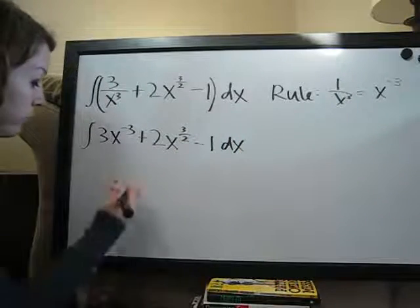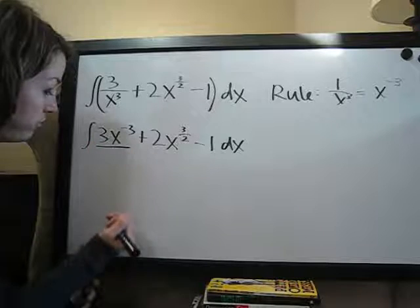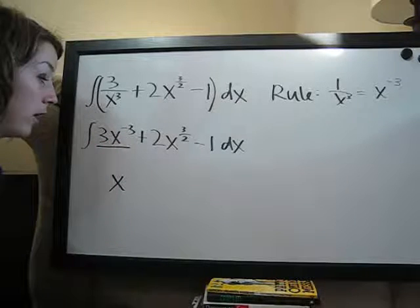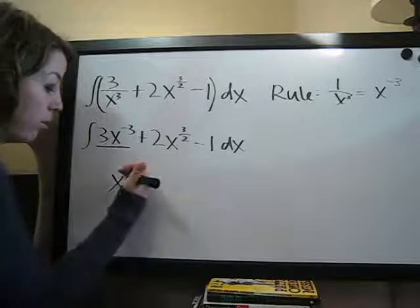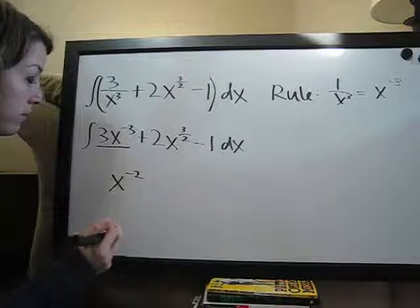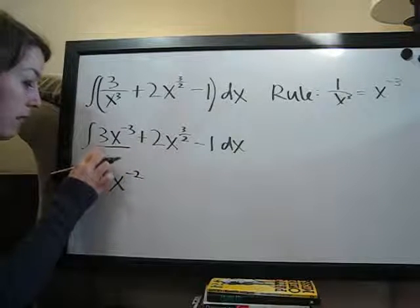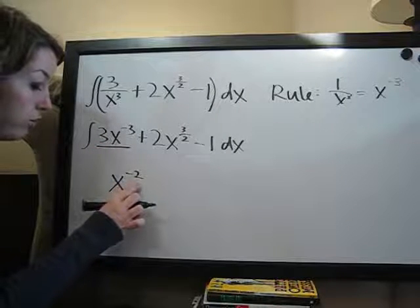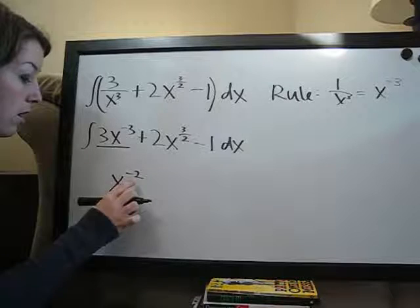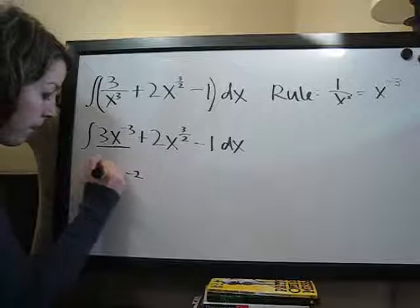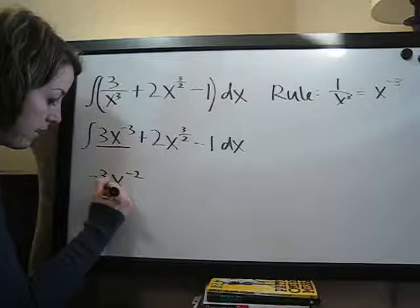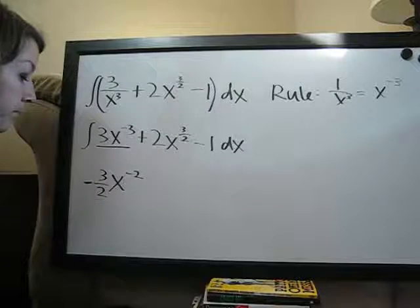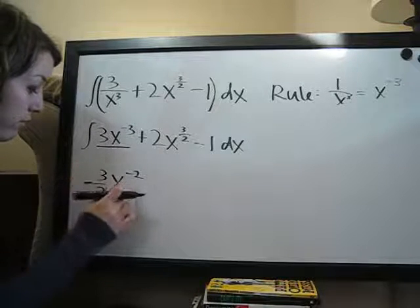Now we can take it term by term. We're going to do this term first. We write the x down here, and we're going to add 1 to the exponent. Negative 3 plus 1 is negative 2. And then, as always, divide the coefficient on this term by the new exponent. So it's going to be 3 over negative 2, which is negative 3 halves.